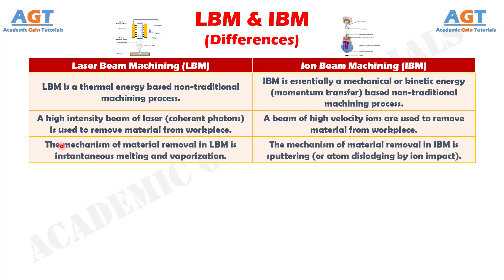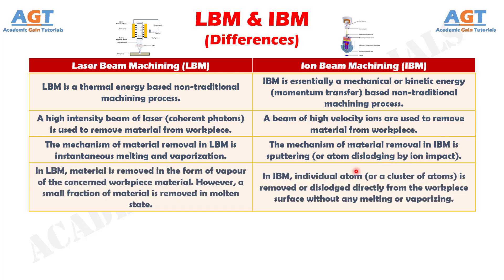Number 3. The mechanism of material removal in laser beam machining is instantaneous melting and vaporization, whereas the mechanism of material removal in ion beam machining is sputtering, or atom dislodging by ion impact.